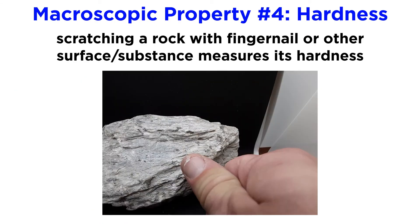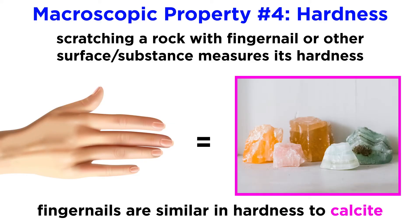Even scratching a rock with your fingernail can be a quick way to classify and identify minerals, telling you something about the strength of its chemical bonds. A typical human fingernail has a hardness, or resistance to scratching, similar to the mineral calcite.